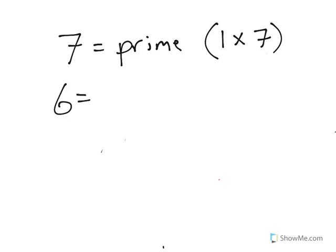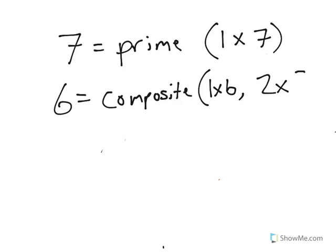The number 6, however, is what we call composite. Because I can multiply 1 times 6, I could also get two groups of 3, or 2 times 3, in order to get there. So it is not only 1 times 6 that will get me there.